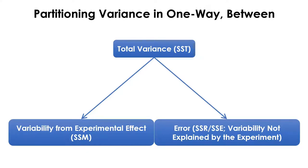So far, we have seen how the variances are partitioned in between-subject ANOVA. Now, let's take a look at how variances are partitioned in a one-way within-subject design.